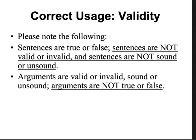Sentences — or one way to put this differently — premises or statements or propositions are themselves true or false. When I say 'human beings are mortal,' that statement is either true or false. Sentences are not valid or invalid. Sentences are not sound or unsound.